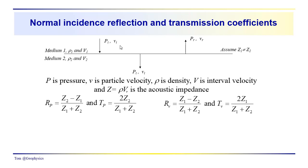Let's start with a brief reminder concerning the characteristics of wave propagation across a boundary. We have two layers, or media — medium one and two — with different velocities and densities: ρ1, V1, ρ2, V2. We assume that their product, the acoustic impedance, is also different; in other words, Z1 is not equal to Z2, so we have a difference in acoustic impedance above and below this interface.